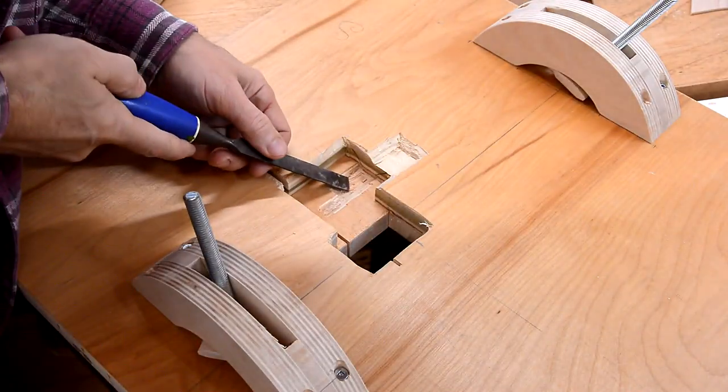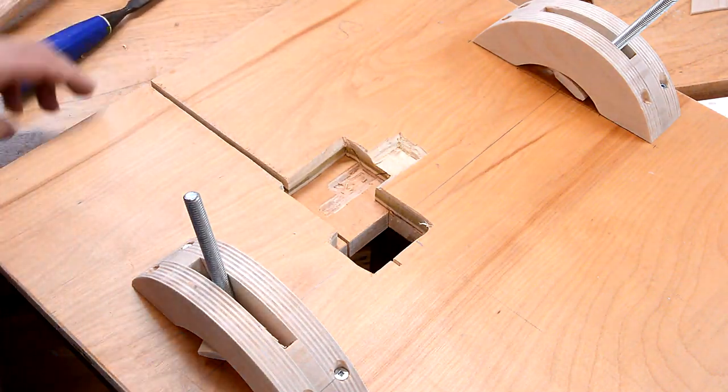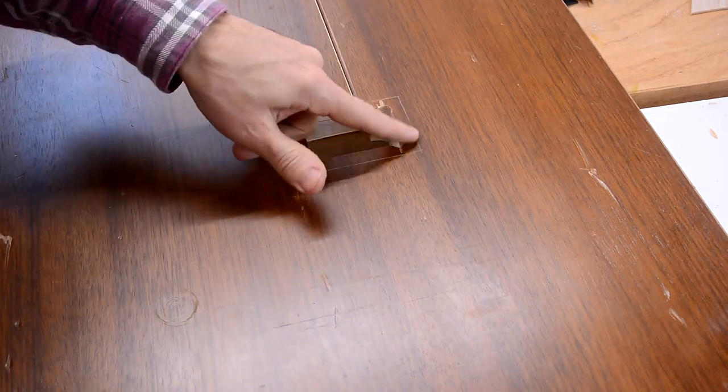Got this area all chiseled out to make room for the blade guides when the table tilts, and now I just need to carve out a spot here for the insert.